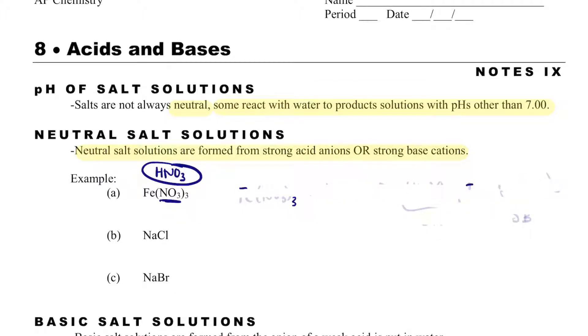And so we can look at something without even writing the reaction and kind of figure that out. But you can always write the reaction if you need to. And so this FeNO3, I see HNO3, which I know is a strong acid, so I know that it's going to be neutral.